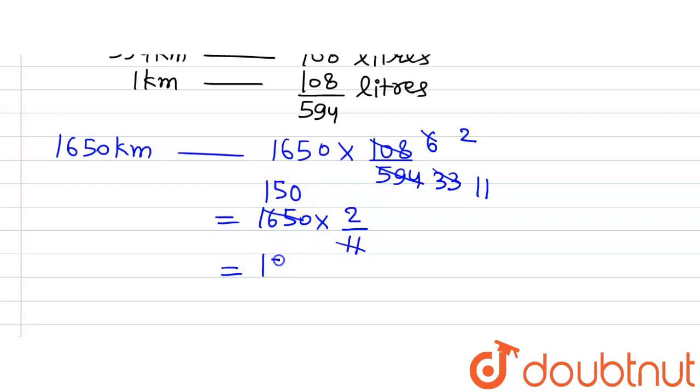So 150 multiplied by 2 equals 300. The final answer is that 300 liters of diesel is required to cover the distance of 1650 kilometers.